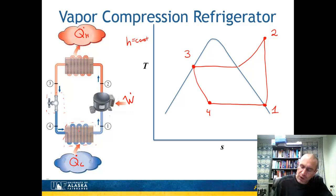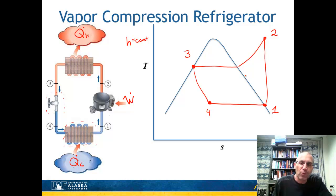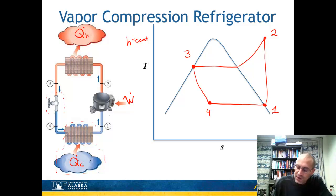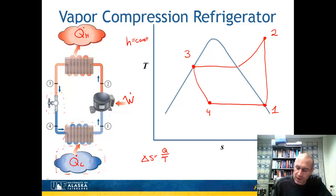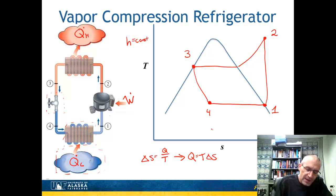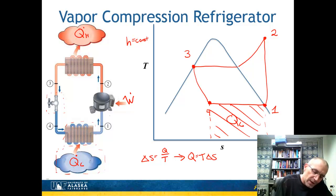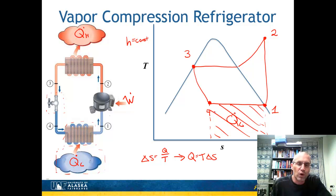The process from 4 to 1 assumes no pressure drop in the freezer box. An important point: what we really care about is Q_L — how much heat we can remove from the refrigerated space between points 4 and 1. Since delta S equals Q over T at constant temperature, Q equals T times delta S. This means the area under the 4-to-1 process on the TS diagram represents the cooling capacity — that area is Q_L. To optimize the cycle, we want to increase this area without increasing the work requirement.